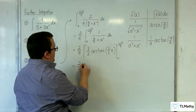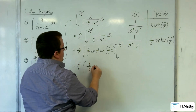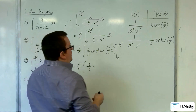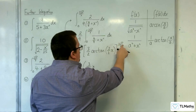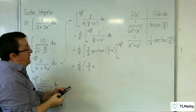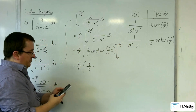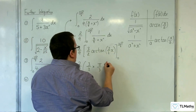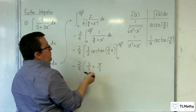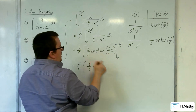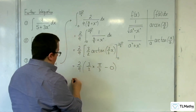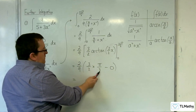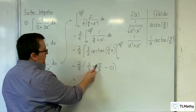So 2 ninths times — we've got 3 halves times arc tan of 3 halves x. The 3 halves knocks out the 2 thirds, so we're left with arc tan of root 3, which is pi over 3. Substituting in 0, arc tan of 0 is 0, so we're just taking away 0. The 3s knock out and the 2s knock out, so we get pi over 9.